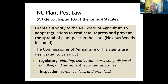I operate under two pest laws in North Carolina. The first is the plant pest law. It gives the North Carolina Board of Agriculture the authority to adopt regulations so that we can eradicate, repress, and prevent the spread of plant pests in the state. All employees are agents and we carry out regulatory as well as inspection jobs. We can regulate anybody who wants to plant, cultivate, harvest, or get rid of things, and we can inspect cargo vehicles and premises. A couple times a year we set up shop on I-95 and inspect trucks going north and south to make sure they've treated their plants with the correct insecticides for fire ants.